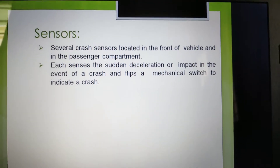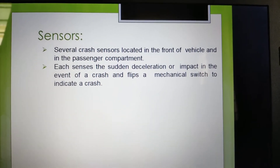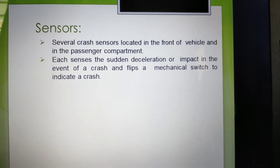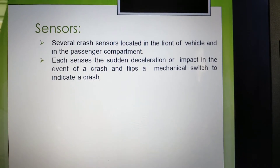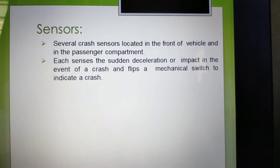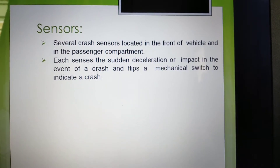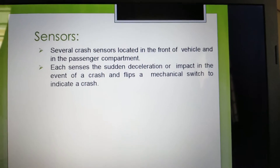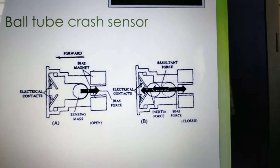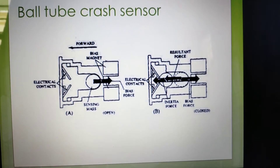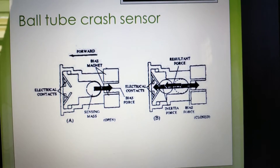Crash sensors are located in the front of the vehicle and in the passenger compartment. They sense sudden deceleration or impact in the event of a crash and flip a mechanical switch to indicate the crash. This is a multiple-train sensor used in the airbag system.